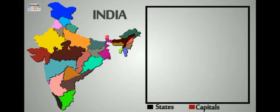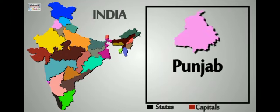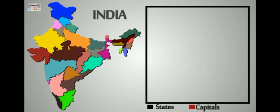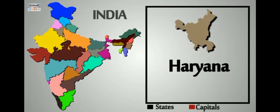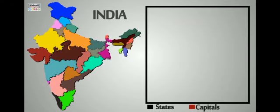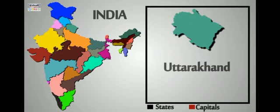Next is Punjab, its capital is Chandigarh. The next one is Haryana — it's our state — and its capital is also Chandigarh. So that means Haryana and Punjab both share a common capital. Next is Uttarakhand, its capital is Dehradun.